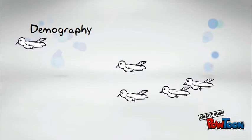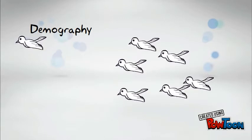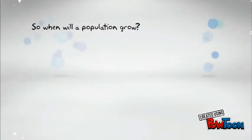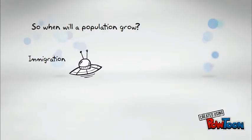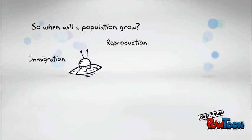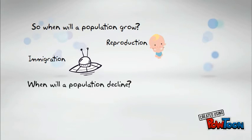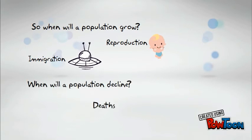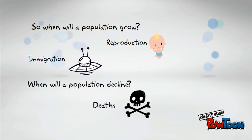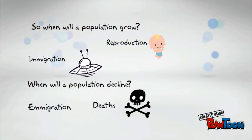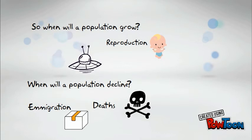But how do we know when a population grows? Well, for one, through immigration — new individuals moving in from another population — and number two, when new members are born through reproduction. But what about when the population is declining? That could be because of a greater number of deaths, or due to emigration, when individuals of a population move out.